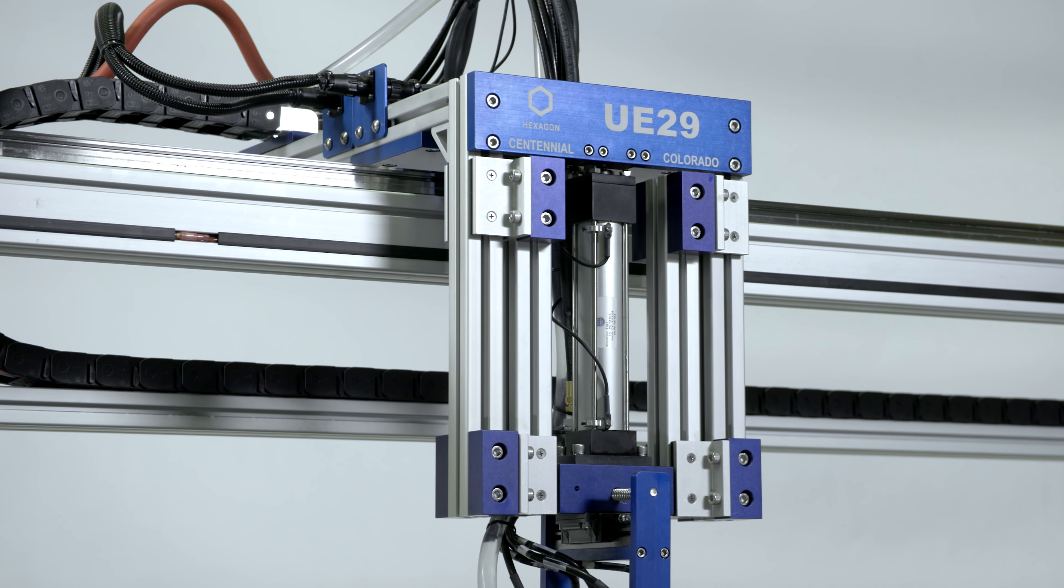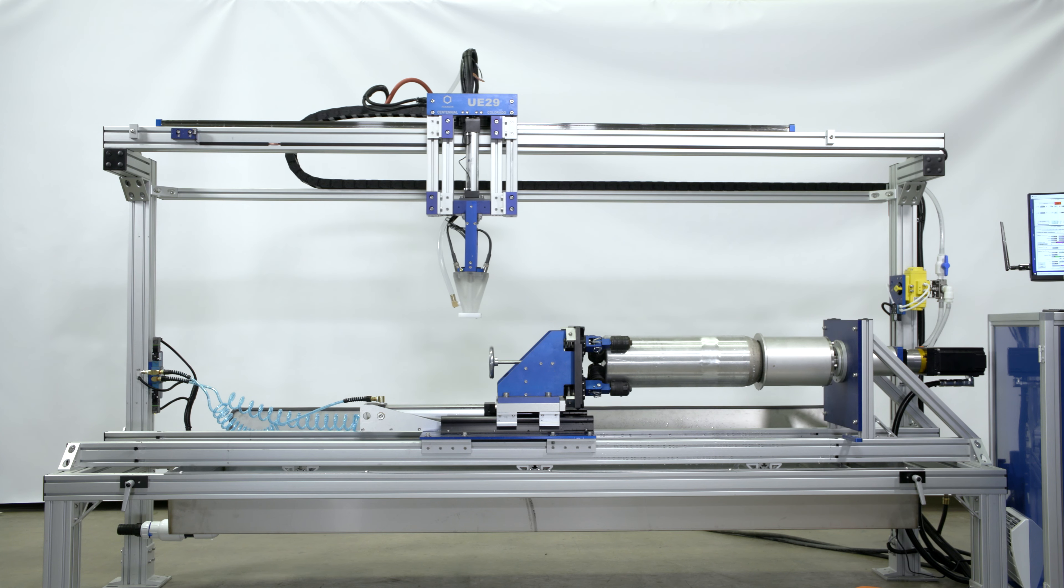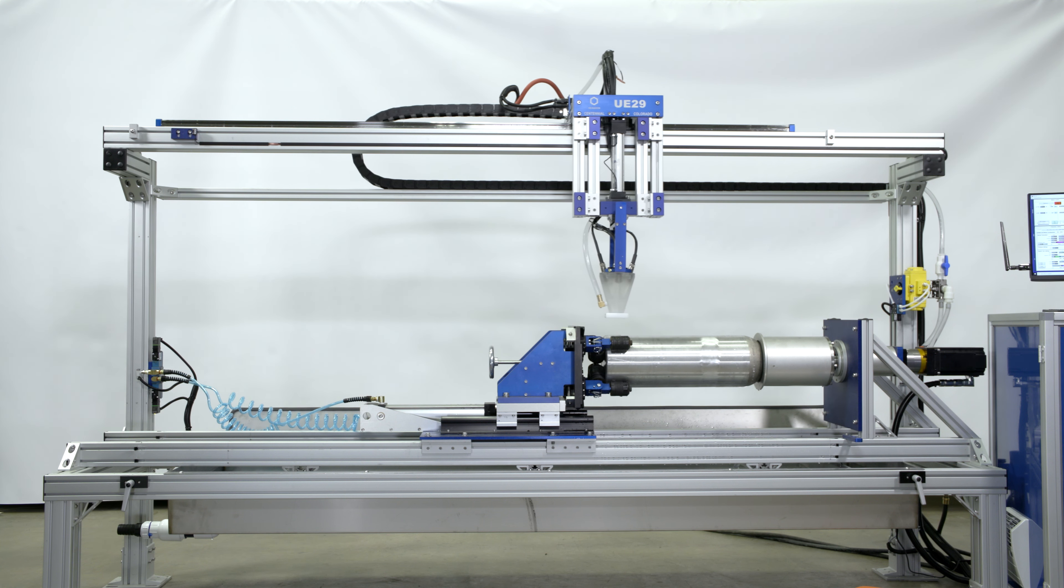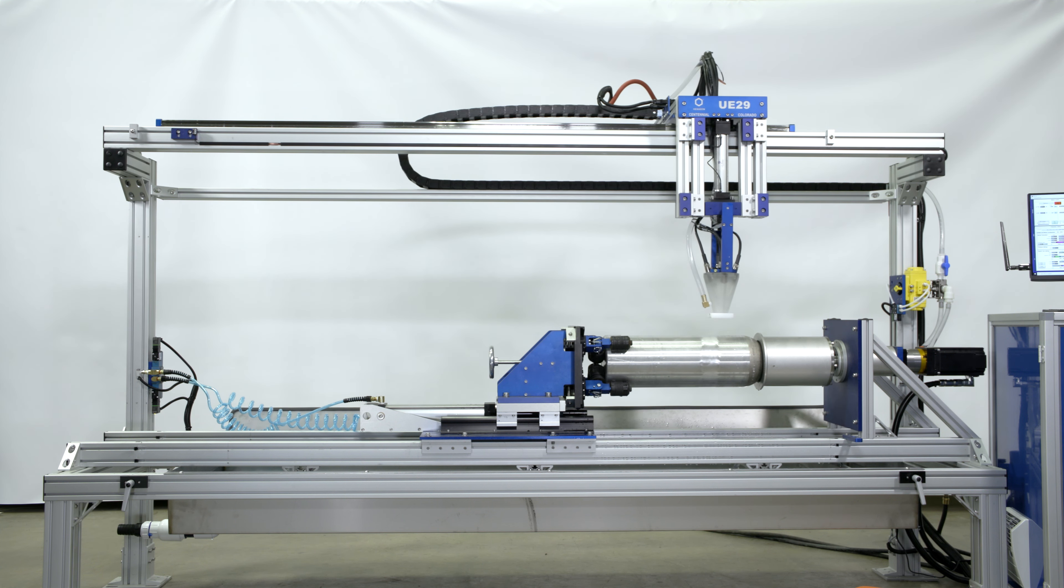The UE29s are entry-level pieces of equipment. This allows for a small footprint, easy testing operations, really easy to learn for the operators, and it doesn't take up all the space in your shop.